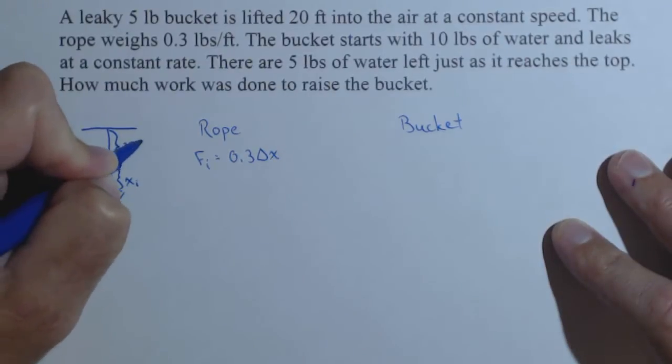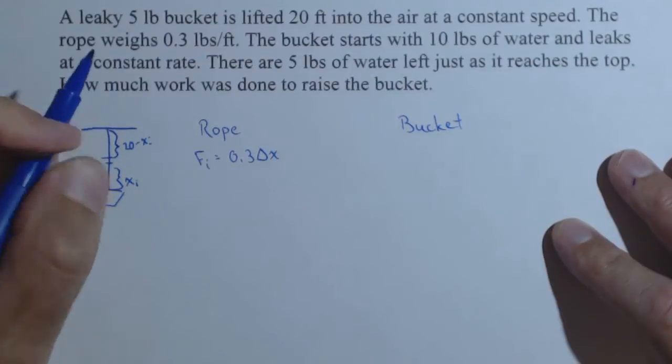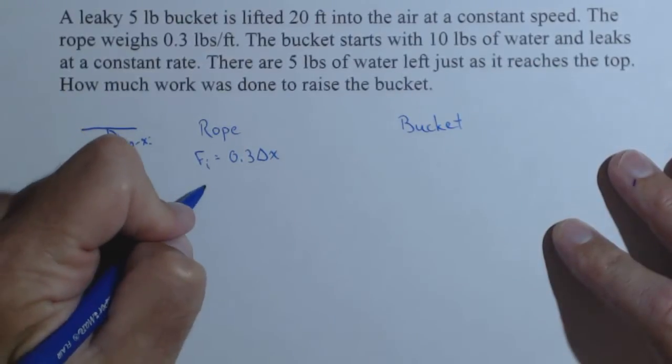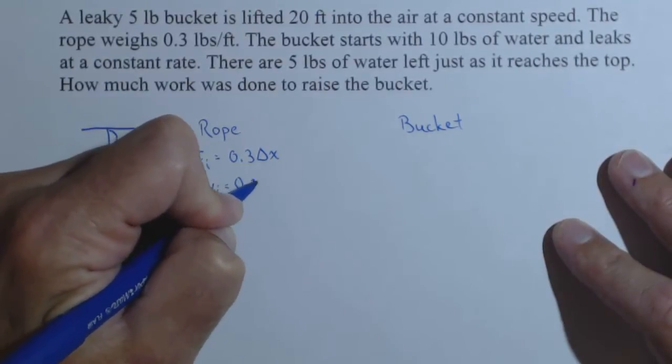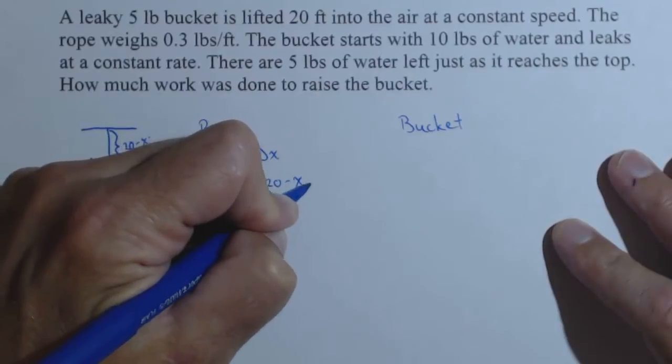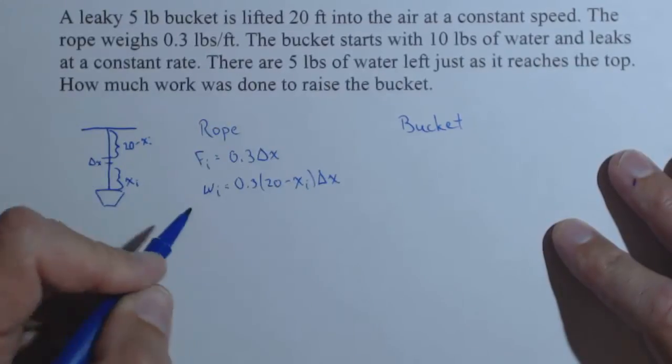So this is 20 minus x sub i, then the work on the ith slice is 0.3 times 20 minus x sub i delta x.